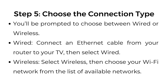Step number five: choose the connection type. You'll be prompted to choose between wired or wireless. For wired, connect an ethernet cable from your router to your TV, then select wired. For wireless, select wireless, then choose your Wi-Fi network from the list of available networks.